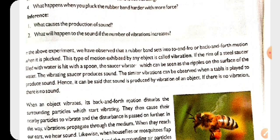If the rim of a steel saucer filled with water is hit with a spoon, the saucer vibrates and you will see ripples of water in it. When we hit the surface, it starts vibrating and shows us ripples. Hence, it can be said that sound is produced by the vibrating of an object. If there is no vibration, there is no sound.